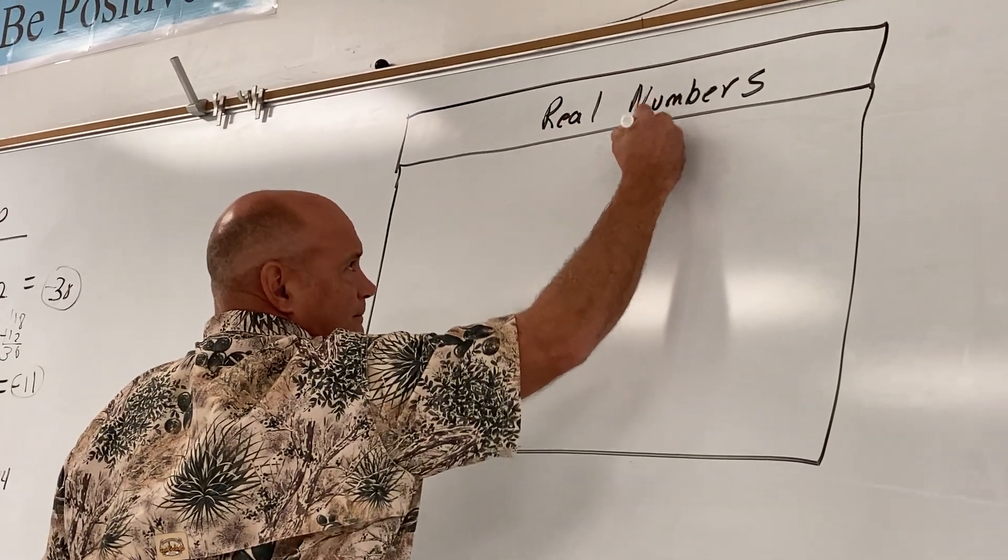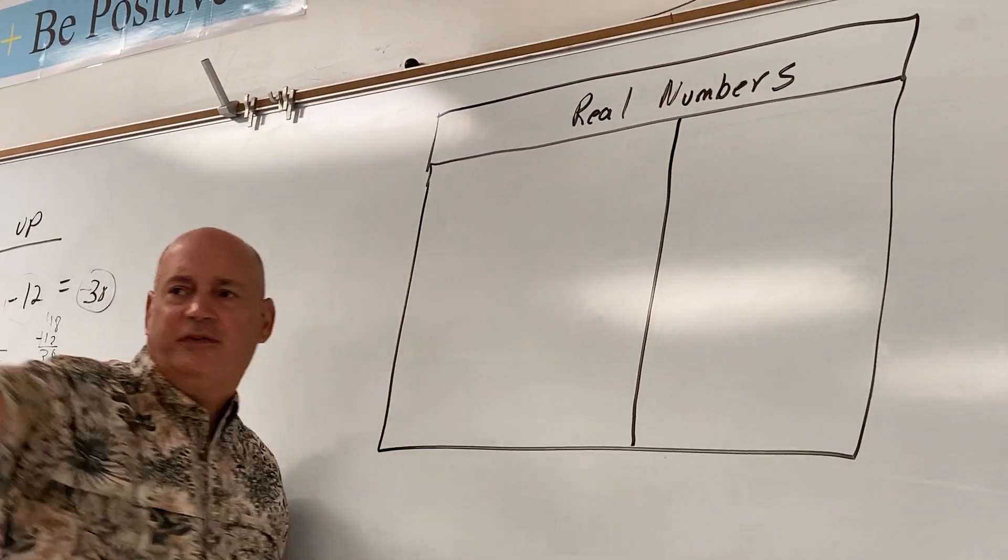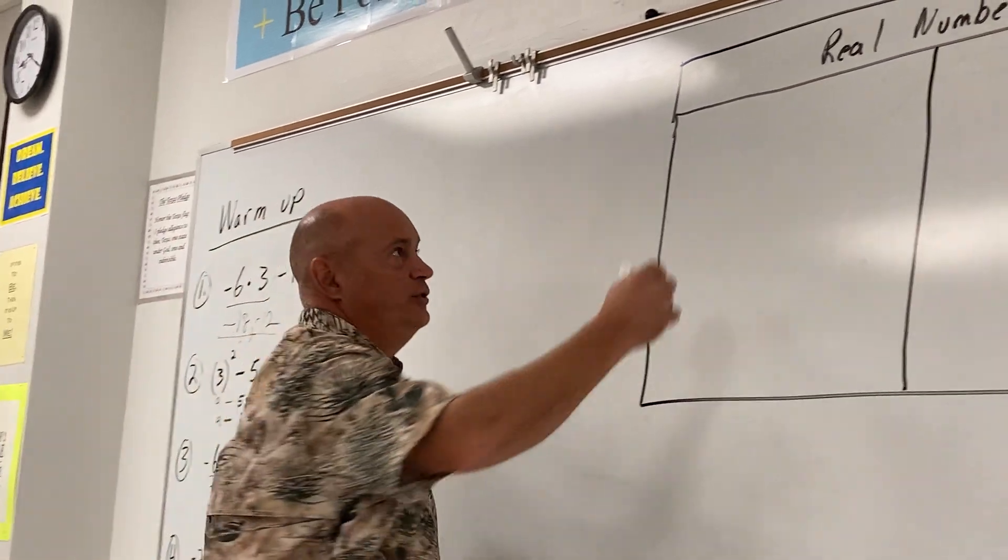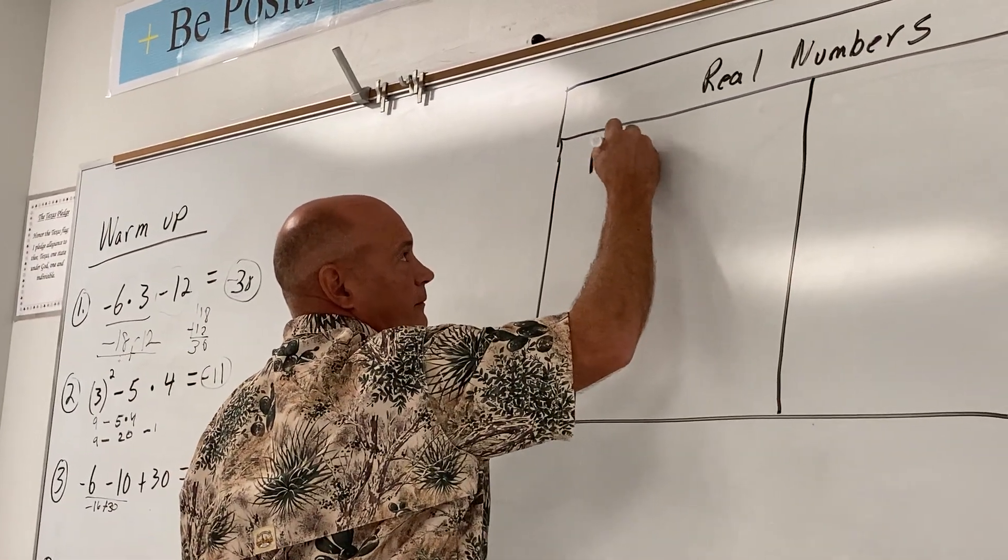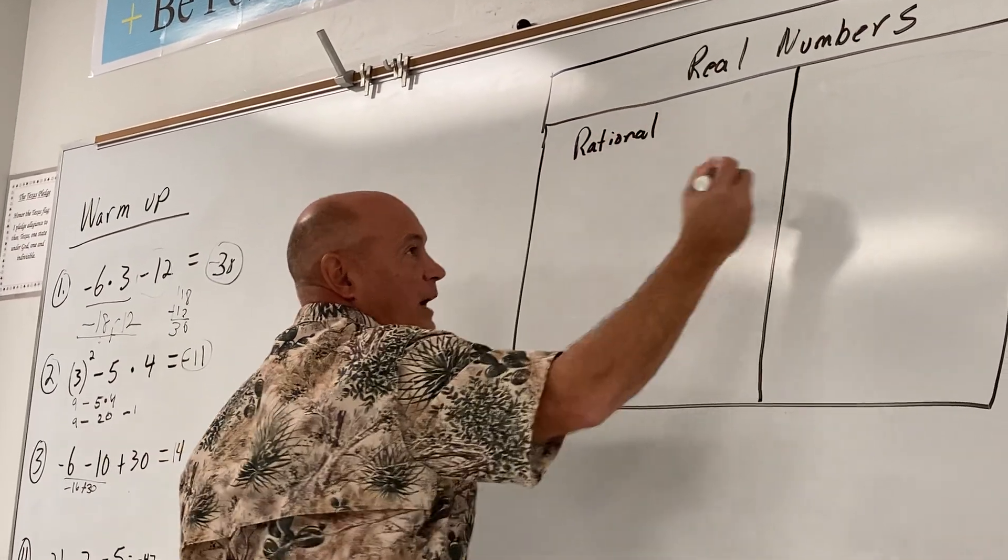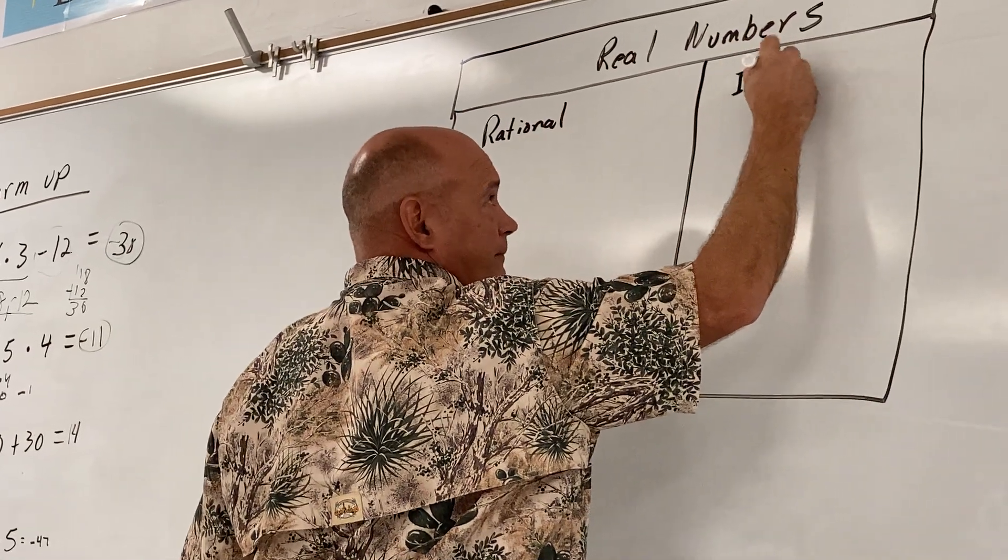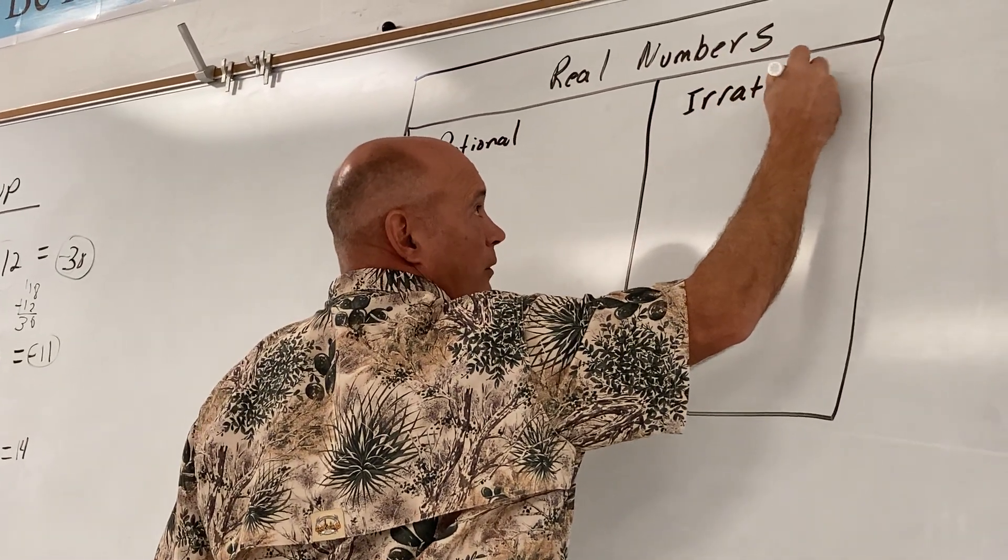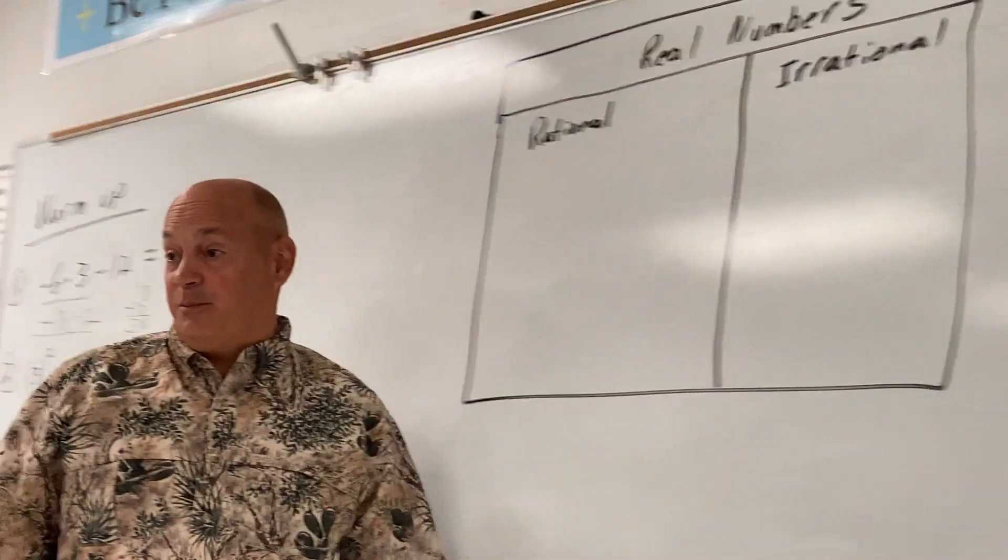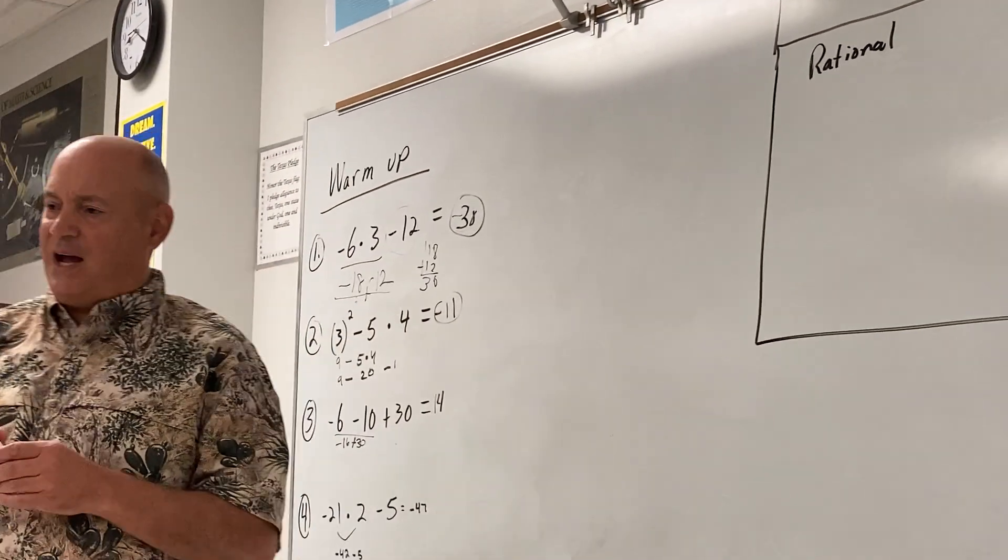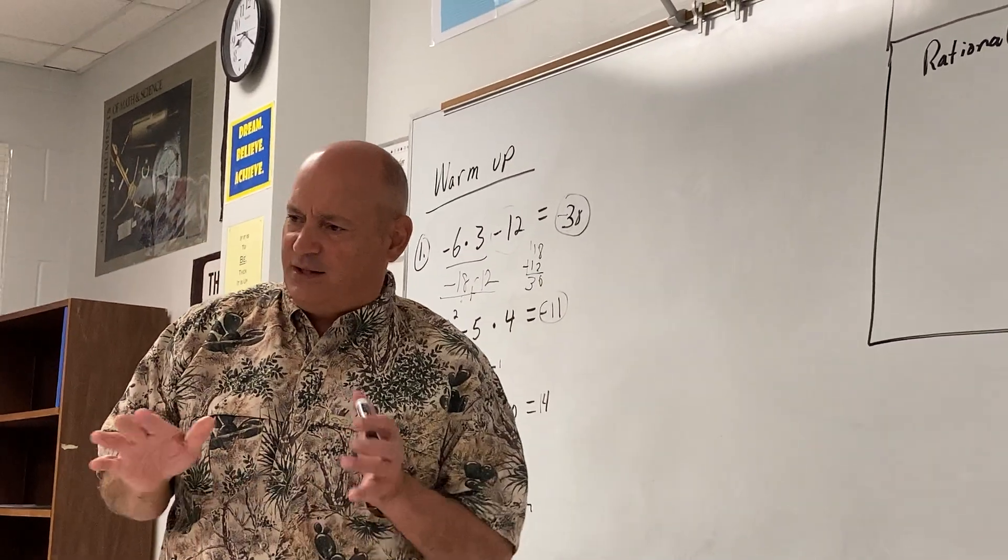The real number set is made up of two items: rational numbers and irrational. Now, I made it bigger on purpose. The rational numbers have more in it than the irrational.